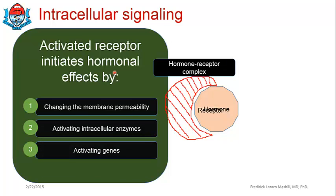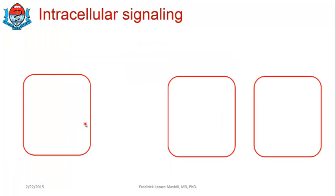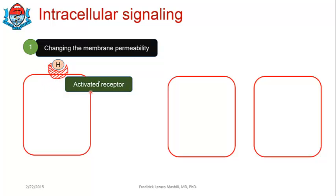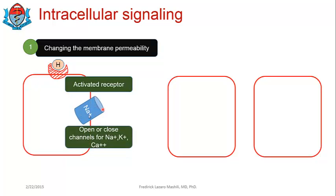So we have three ways in which an activated receptor initiates hormonal effects inside the cell. Let's look at the first one: changing the membrane permeability. Once a hormone binds to a receptor, you have an activated receptor, and this activated receptor results in a change in membrane permeability — basically the opening or closing of channels for sodium, potassium, and calcium.